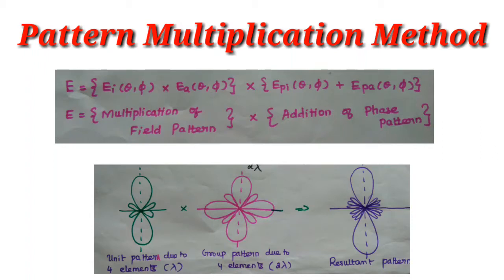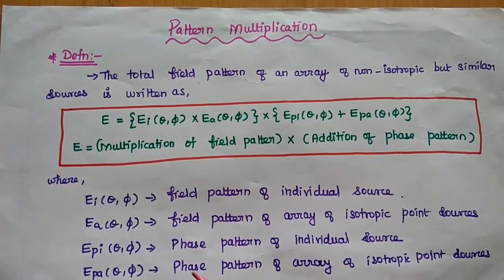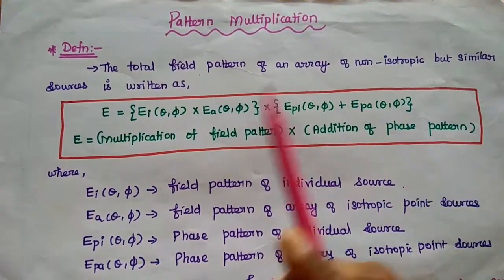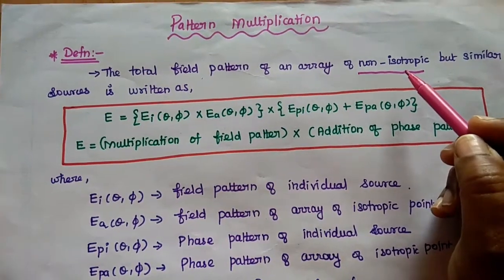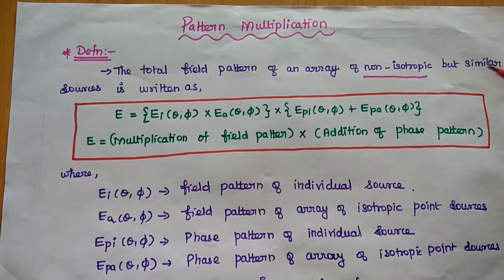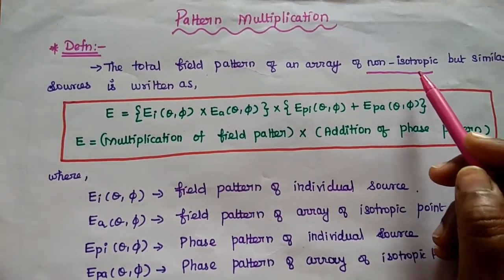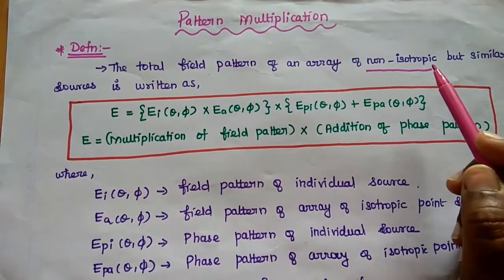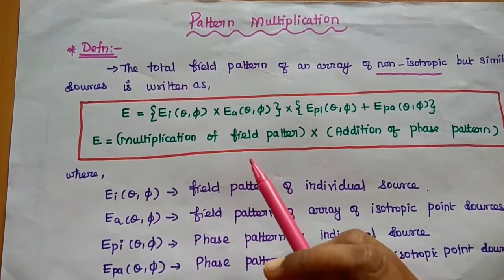Now we are going to discuss pattern multiplication method and its application with examples. Pattern multiplication is the method mainly used to find out the total field pattern of an array of non-isotropic but similar sources. In case of isotropic sources, it radiates in all directions, but in case of non-isotropic sources, the antenna array elements radiate in particular directions. For that array system, we use this pattern multiplication method.